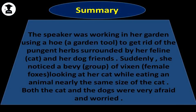What about summarizing the poem? The speaker was working in her garden using a hoe, which is a garden tool, to get rid of the pungent herbs, surrounded by her feline, her cat, and her dog friends. Suddenly, she noticed a bevy or a group of vixen, female foxes, looking at her cat while eating an animal nearly the same size of the cat. Both the cat and the dogs were very afraid and worried.